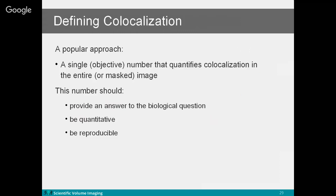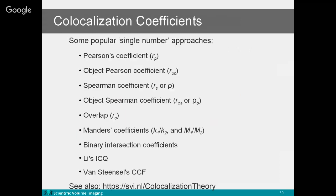Ideally, we want coefficients that can answer our research question and be quantitative and reproducible. This slide lists commonly used co-localization coefficients available in Huygens software: Pearson coefficients, object Pearson coefficients, Spearman coefficients, object Spearman coefficients, overlap, Manders coefficients, binary intersection, ICA coefficients, ICQ, and CCF. The mathematical background for each can be found on our webpage. Each coefficient has its own definition with advantages and disadvantages.